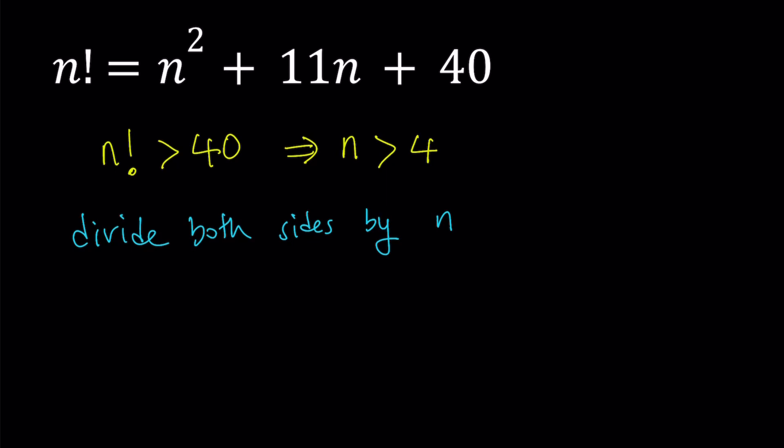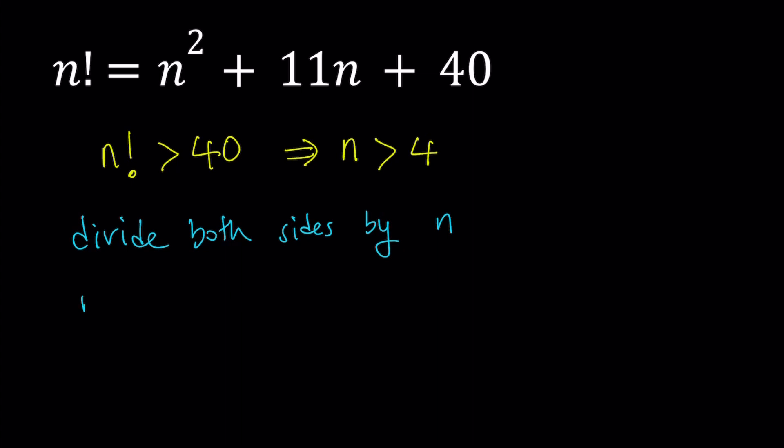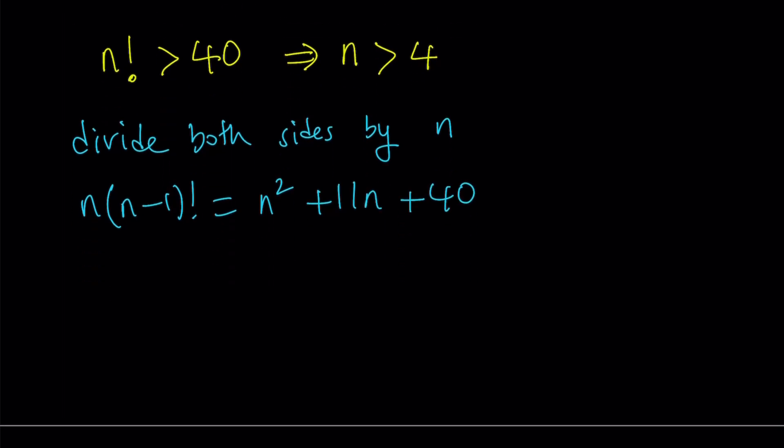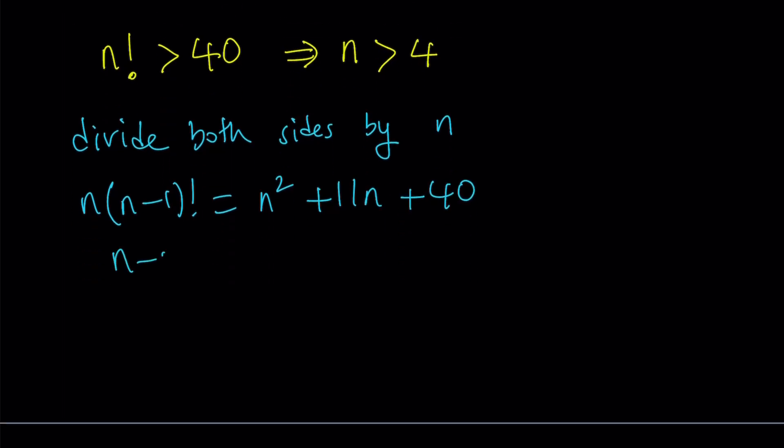n factorial can be written as n times n minus 1 factorial. Let's go ahead and do that first. And then I'm going to divide everything by n. When I do, I'm going to get n minus 1 factorial, which is an integer.